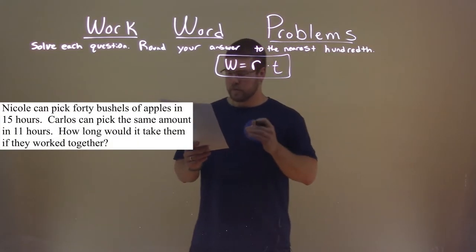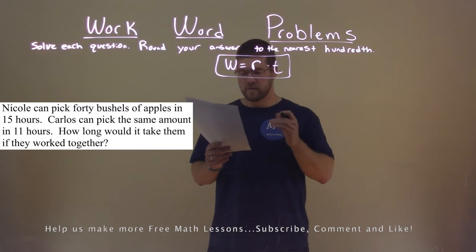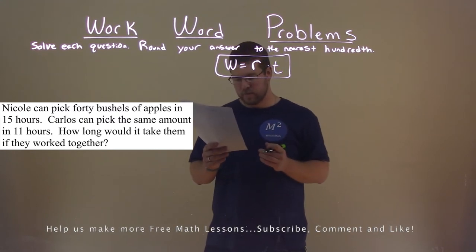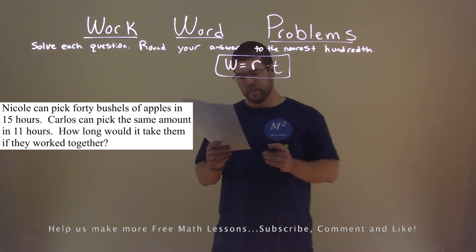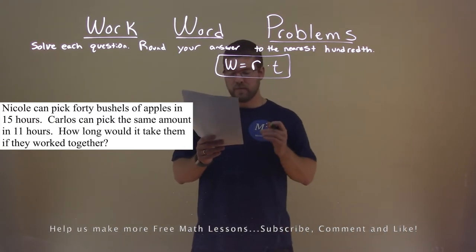We're given this problem right here. Nicole can pick 40 bushels of apples in 15 hours. Carlos can pick the same amount in 11 hours. How long would it take them if they worked together?